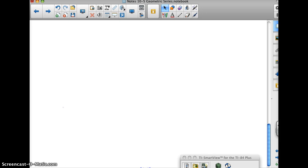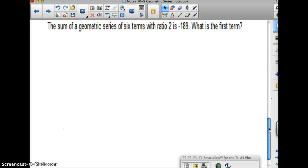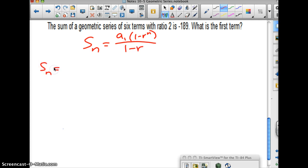This time it tells me what the sum of a geometric series of 6 terms with ratio of 2 is. It's negative 189. What is the first term? So if we're talking about the sum of a geometric series, s sub n equals a sub 1, 1 minus r to the n, all over 1 minus r.